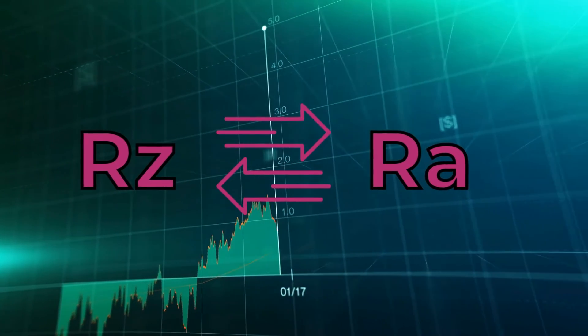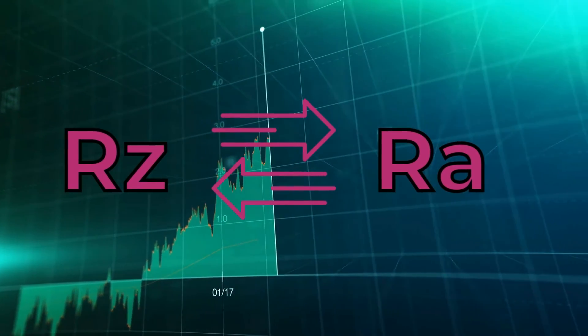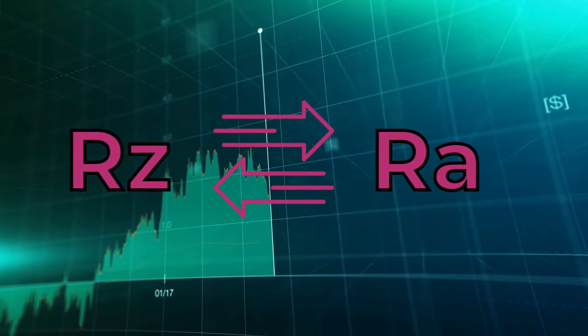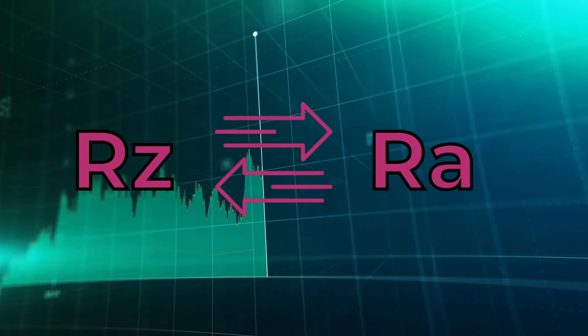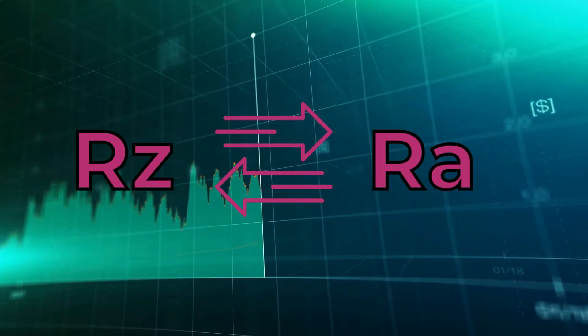The same logic is applied when converting RA to RZ or RZ to RA. Based on statistics, we can forecast the RZ range for a specific RA with reasonable probability.